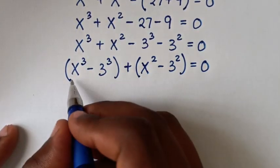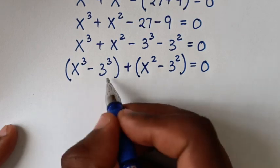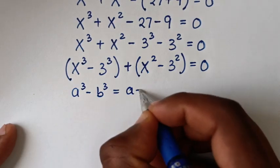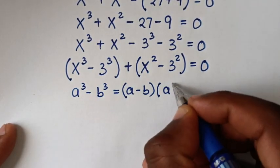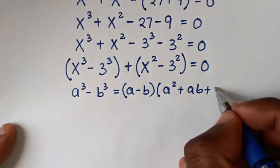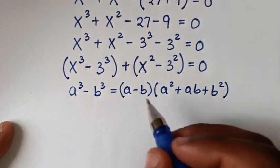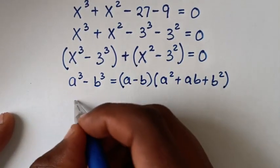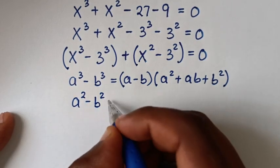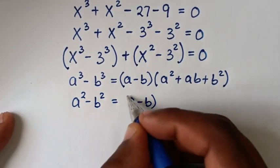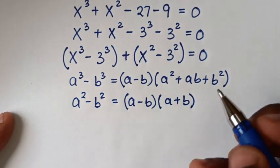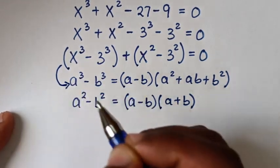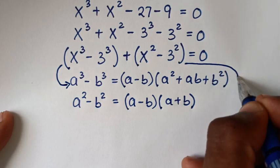Then in the next step, from this part here, it is in the form of the algebraic rule which is a power 3 minus b power 3 is equal to a minus b bracket times a squared plus ab plus b squared bracket. And from this part here, it is in the form of a squared minus b squared, so we'll apply the rule a squared minus b squared is equal to a minus b bracket times a plus b bracket.